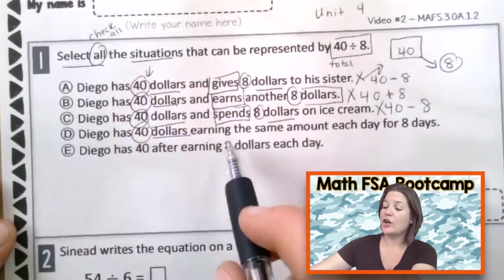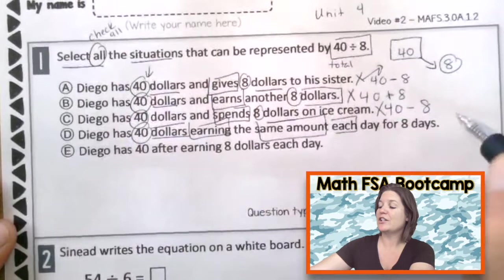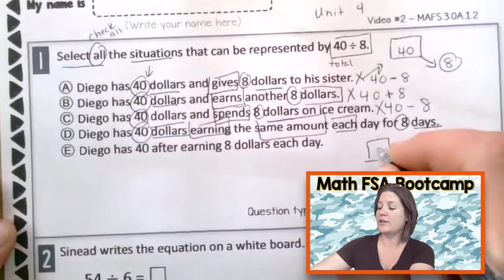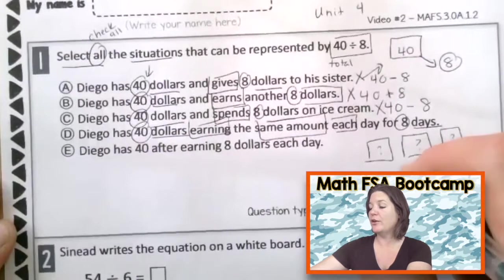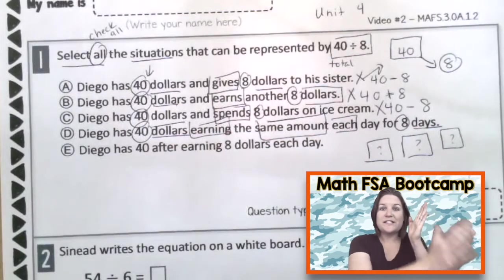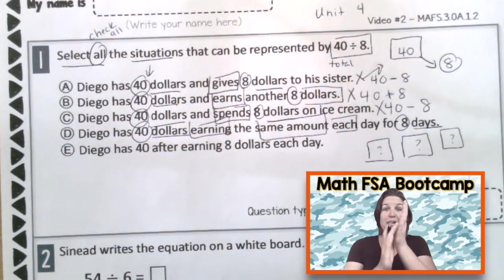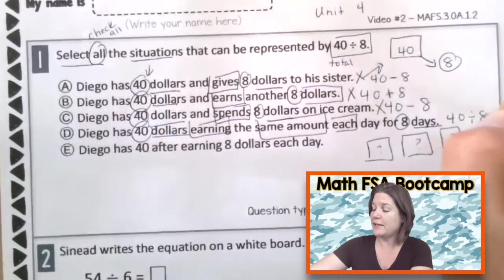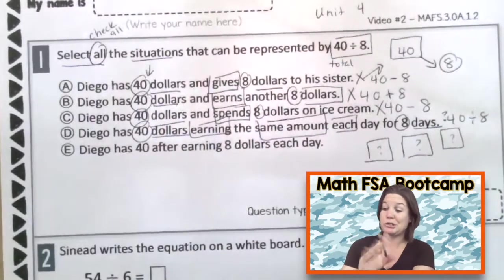All right. Now we have choice D. Diego has $40 again, earning the same amount each day for 8 days. So if this is day one, he earned some money. He earned some money for day two. He earned some money for day three, all the way for 8 days. So $40 in 8 days. Are we separating the money out into days? Yeah. So which operation is this? If we're separating it into equal days, it is division. So we're going to do 40 divided by 8 there. And now I'm going to put a question mark there. I'm going to bubble it in in just a second. Don't you worry.